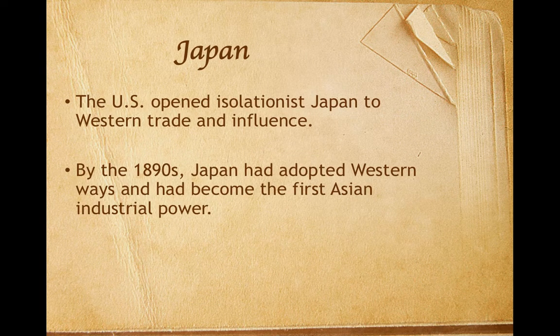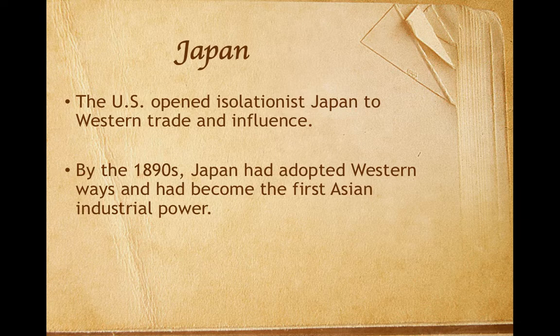Regarding Japan: the United States opened an isolationist Japan to Western trade and influence when Commodore Matthew Perry landed there with American gunships in 1853. By the 1890s, Japan had adopted Western ways and had become the first Asian industrial power. Japan also adopted imperialist policies, defeating China in 1894. In 1905, Japan surprised the West by defeating Russia in the Russo-Japanese War. President Roosevelt brought the Russians and the Japanese together and negotiated a peaceful settlement in the Treaty of Portsmouth, and he won a Nobel Peace Prize for his efforts.